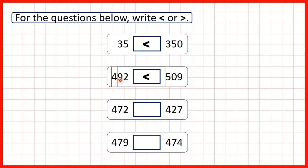We need ten tens just to make one more hundred. So when we're comparing numbers, we need to start by comparing the larger place values first. Now we have 472 and 427. Both of our numbers have four as the hundreds digit, so what we need to do now is move along and compare the next digit — our tens digits. Here we have seven tens, but here we only have two. That means that 472 must be greater than 427, so we need our greater than symbol.